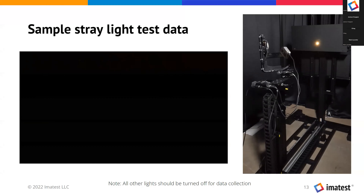Some additional standards to consider are IEEE P4001, which is the standard for hyperspectral testing — we know they're working to develop a new method — as well as ISO TC172, the optics and photonics standard. This is the same group that made the ISO 9358 test, and we know they're looking to update their standard. IEEE P4001和ISO TC172这两个也会再更新关于杂想光的测试标准。